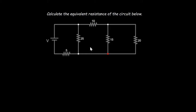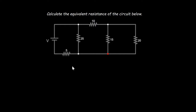Looking at this circuit, we can identify the resistors that are in a series connection, but you can also tell that the 15 ohms and the 20 ohms resistors are in a parallel connection — that is very clear. Since we can see they are in a parallel connection, let's find the equivalent resistance for these two resistors and then continue with the rest. I'm going to represent their equivalent resistance with R.